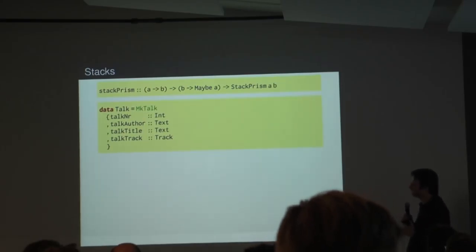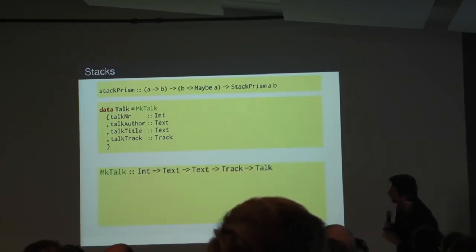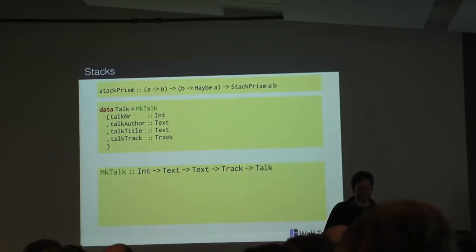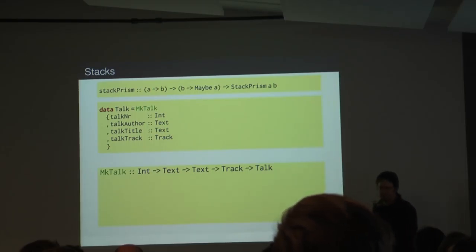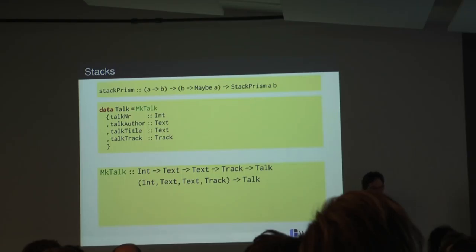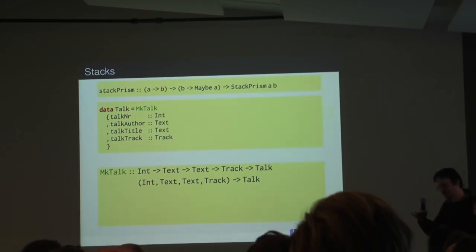Applying this to our concrete example: for Talk, we have one constructor called MakeTalk which takes four arguments. In Haskell notation, the type would be Int -> Text -> Text -> Track -> Talk. Rather than using curried style, we use uncurried style with a tuple of arguments. But tuples are not so nice to work with in practice because Haskell tuple types are all different for every arity. Instead, we use nested pairs — we only have to deal with pairs and tie it at the end to mark the end.